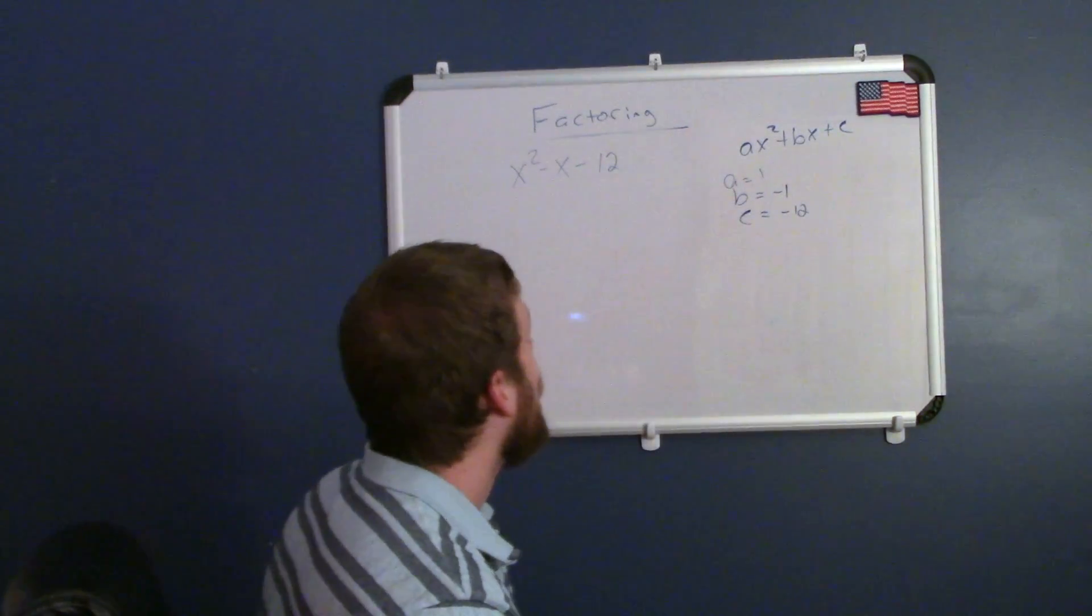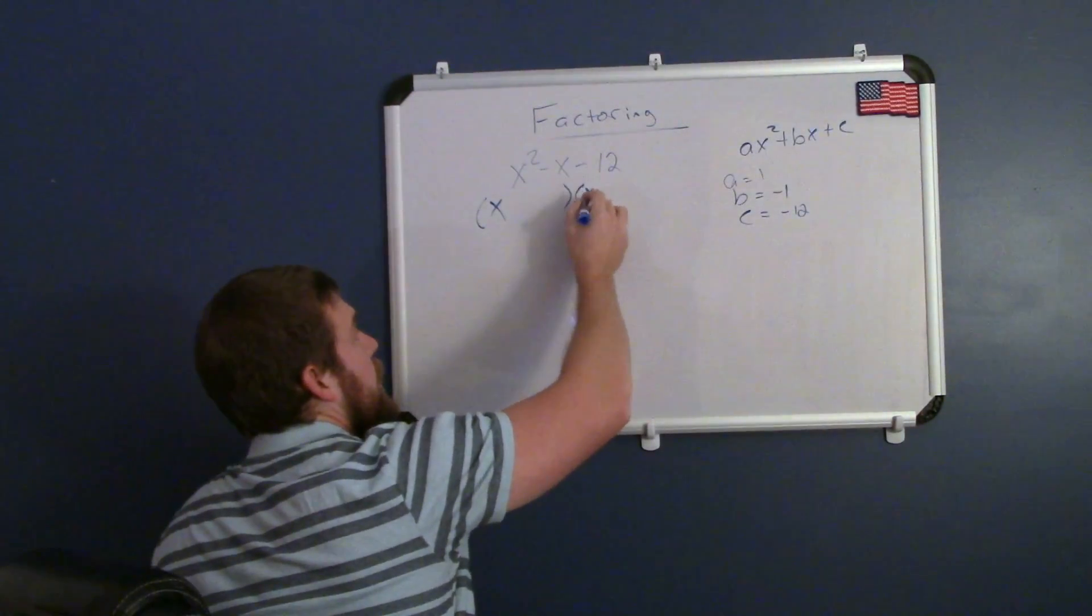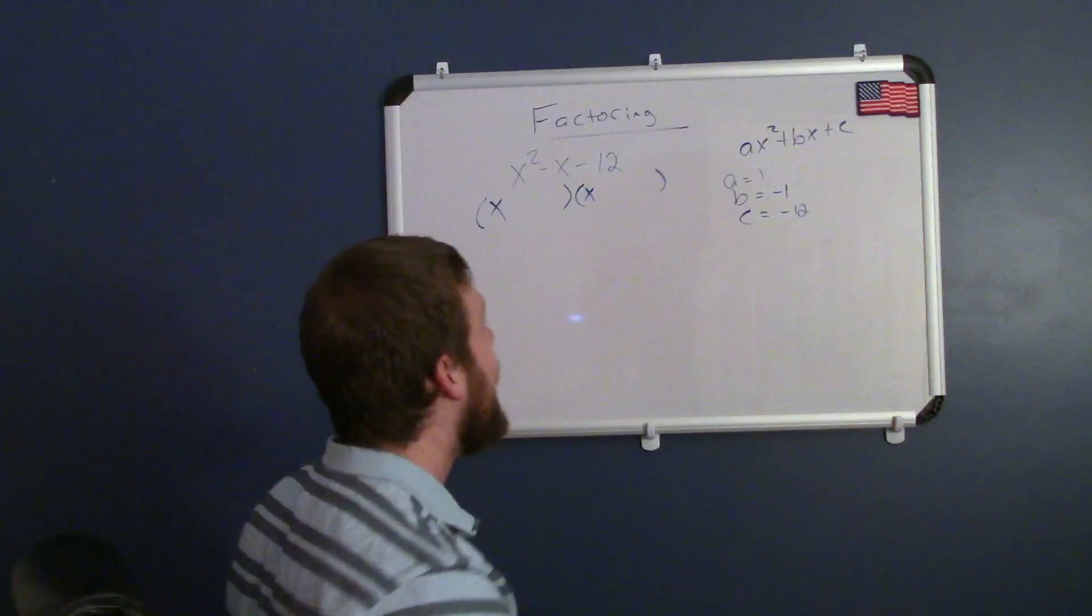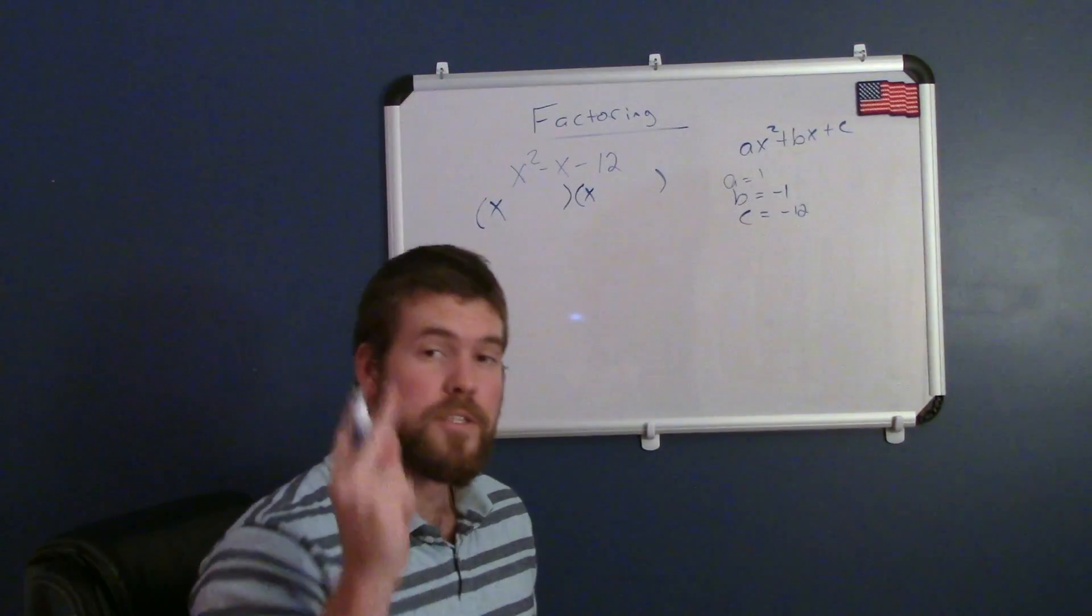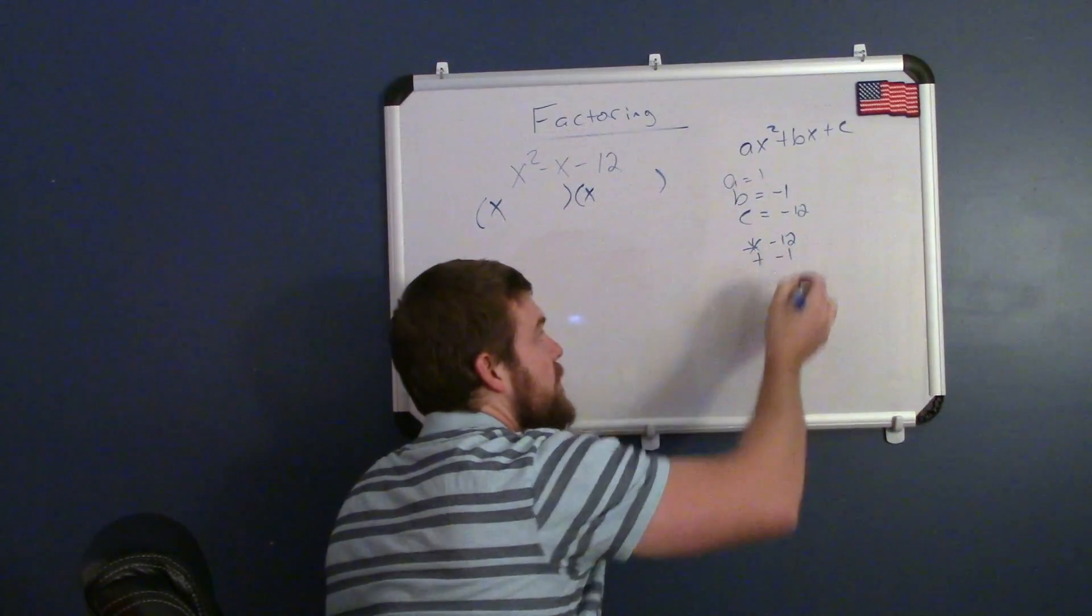Okay, negative 12. So, I'm going to set up my parenthesis here, x and x, and I want to ask myself the question, what two numbers multiply to be negative 12, but add to be negative 1?